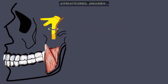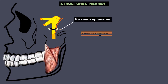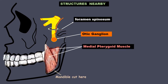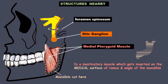Looking at the nearby structures, we have the foramen spinosum, the otic ganglion, and the medial pterygoid muscle, which can be seen if the mandible is cut in this area. It is a masticatory muscle which gets inserted into the medial surface of the ramus and angle of the mandible.